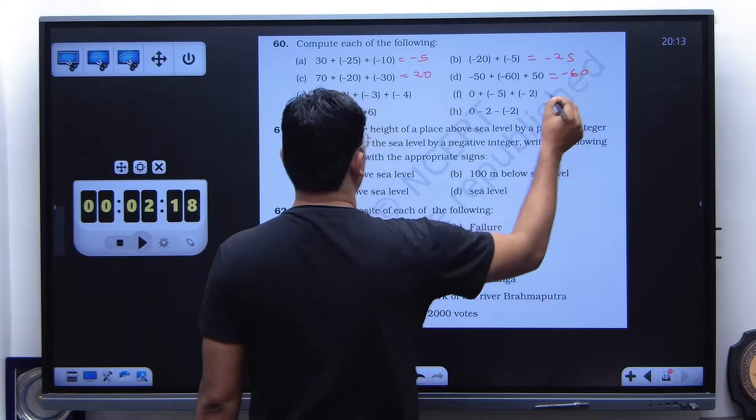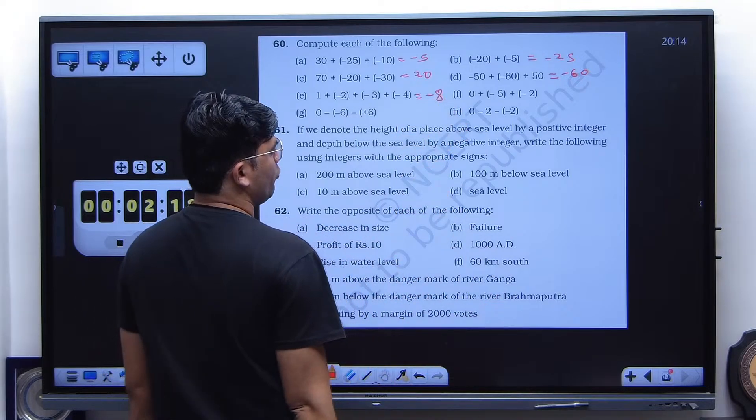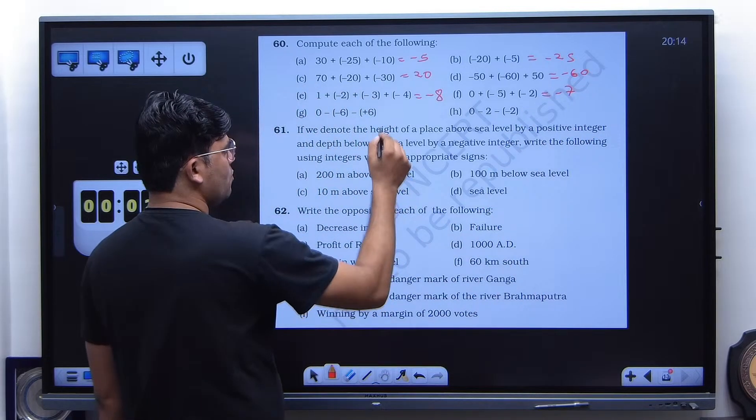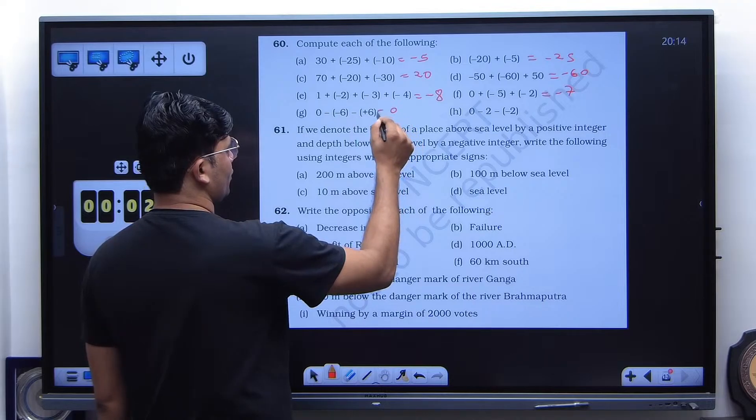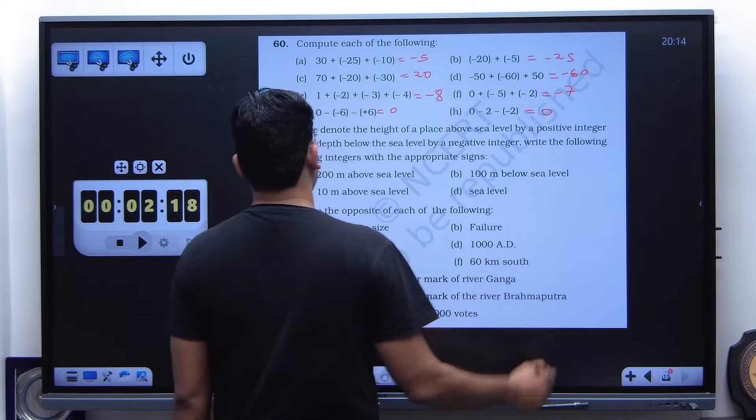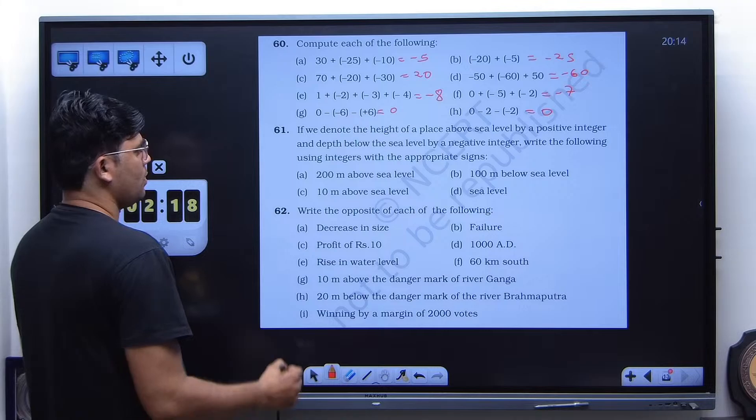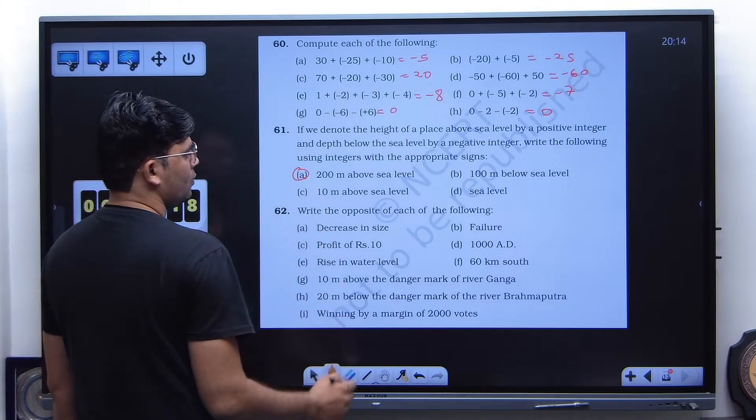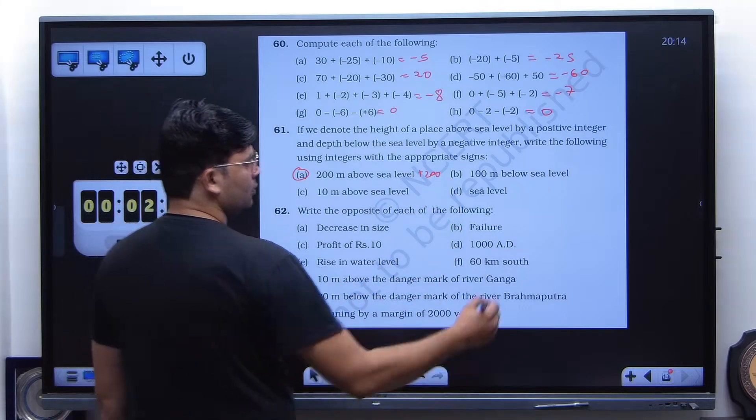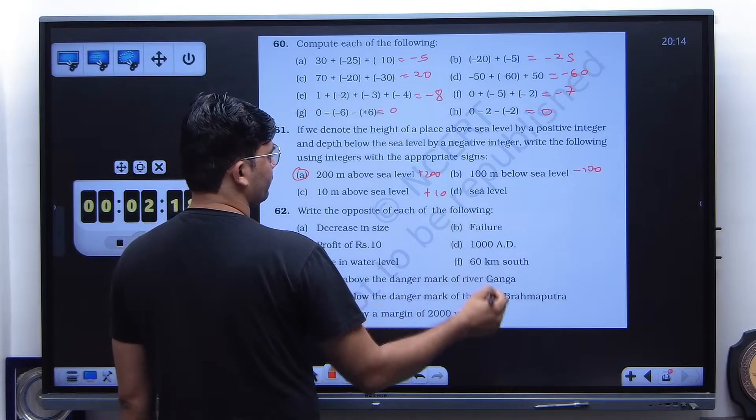For the first one, first one sorry. A is minus 5. 20, B sorry, no no, B is minus 25. C is 20. D is minus 16. Well done. Minus 8, minus 7. Zero. Zero.